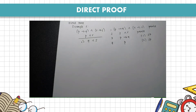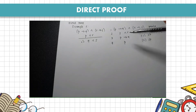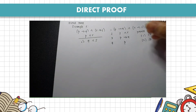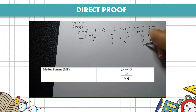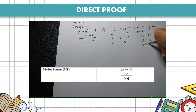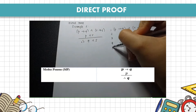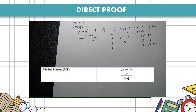Then steps 3 and 4 resemble modus ponens (MP), so the result we get from that is Q.